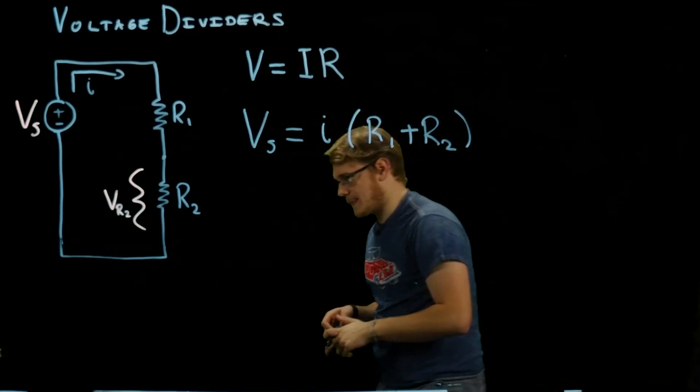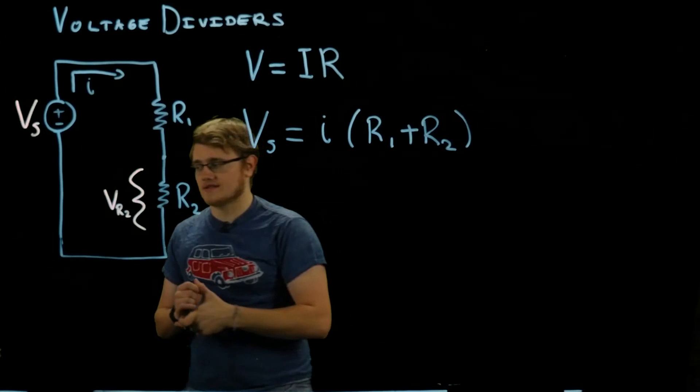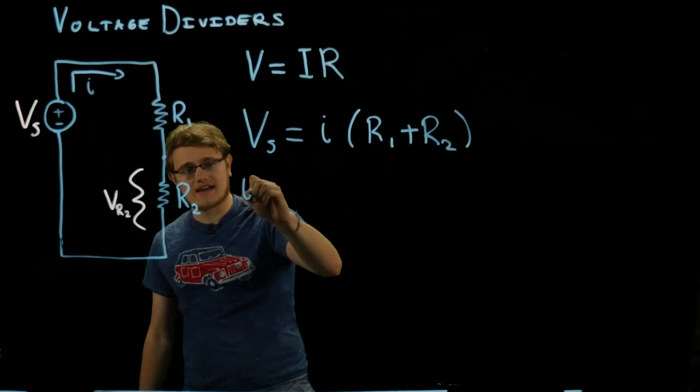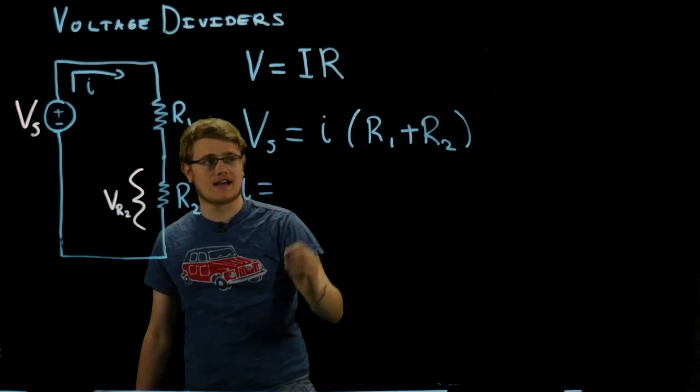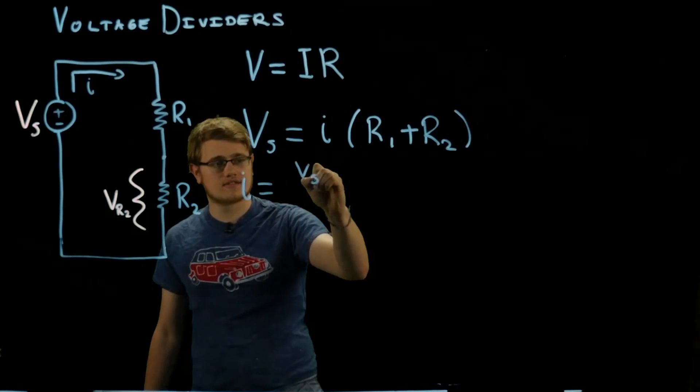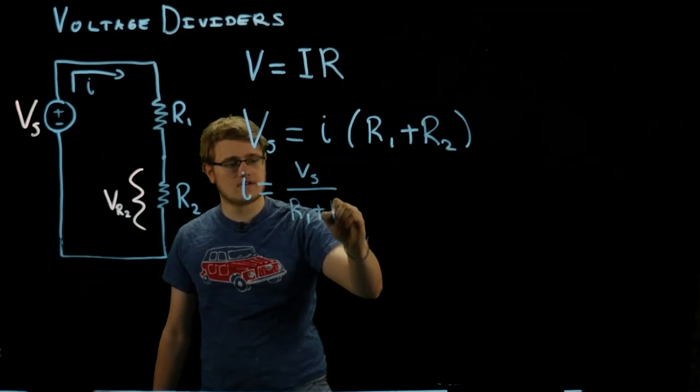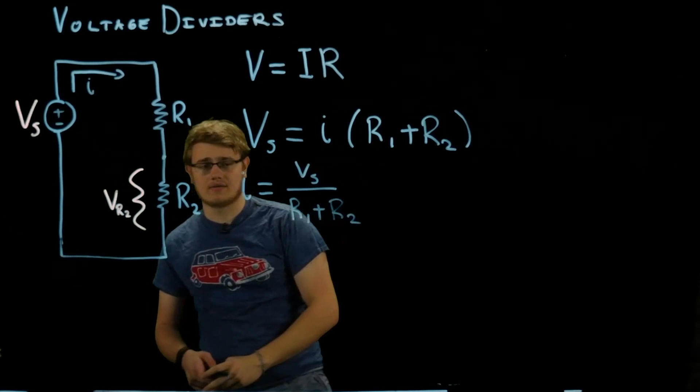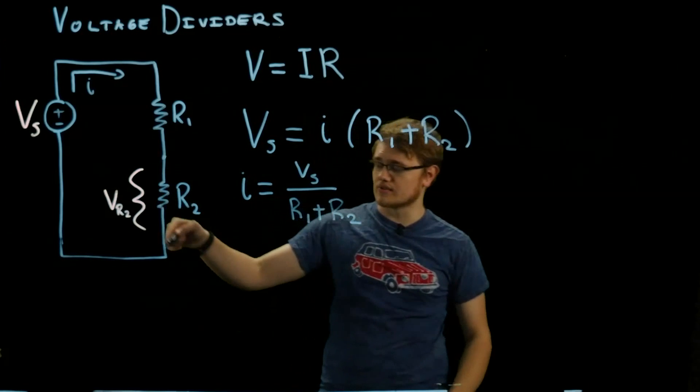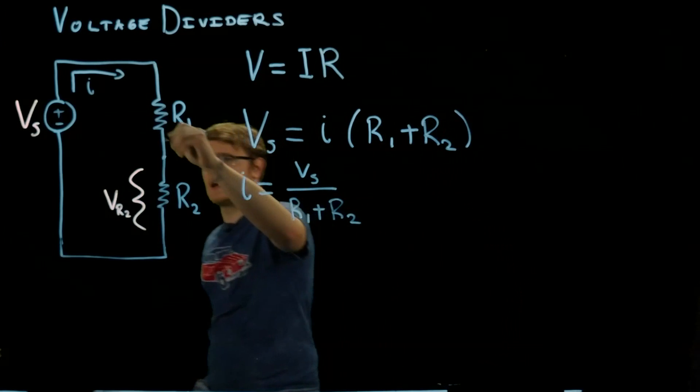From this, we find that I equals Vs over R1 plus R2. Now we have this current. We know the current going through here now, because this is I and they're equal.